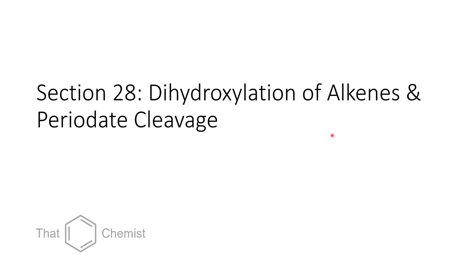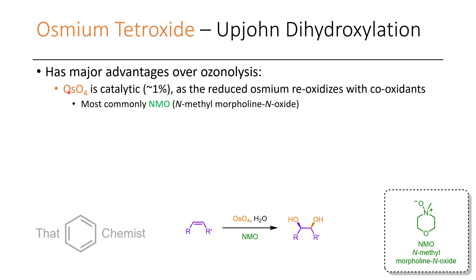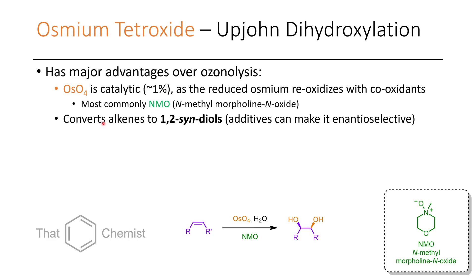Now let's get to today's material: the dihydroxylation of alkenes and subsequent periodate cleavage. Osmium tetroxide is often used for the dihydroxylation of alkenes — this is also known as Upjohn dihydroxylation. It has significant advantages over ozonolysis when combined with periodate. One advantage is that osmium tetroxide is catalytic, usually at only 1% catalyst loading, and an additional oxidant such as N-methylmorpholine oxide (NMO) is used to re-oxidize the osmium back to osmium(VIII). This reaction converts alkenes to 1,2-syn diols, so the two alcohols always end up on the same side.